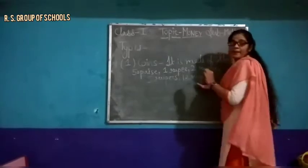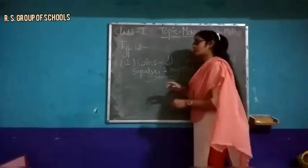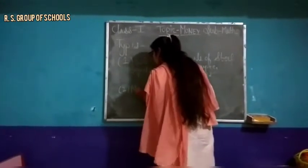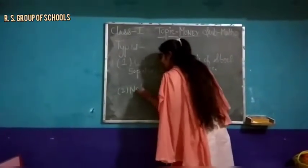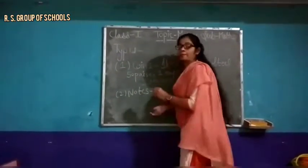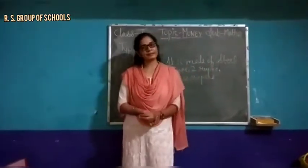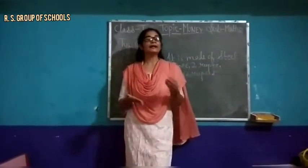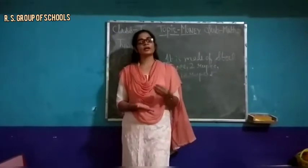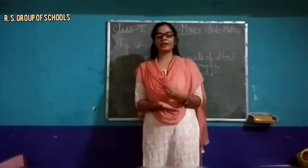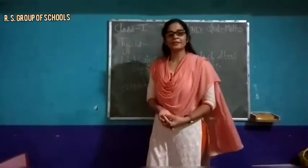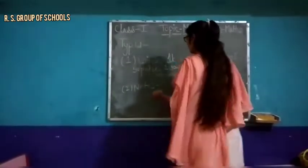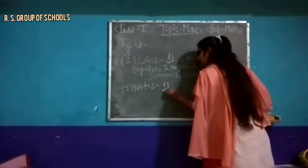Next one is notes. Notes kya hote hai students? Notes are made of paper. Notes kitne type ke hote hai? Five, ten, twenty, fifty, hundred, two hundred, five hundred — bahut saare notes hote hai. It is made of paper.